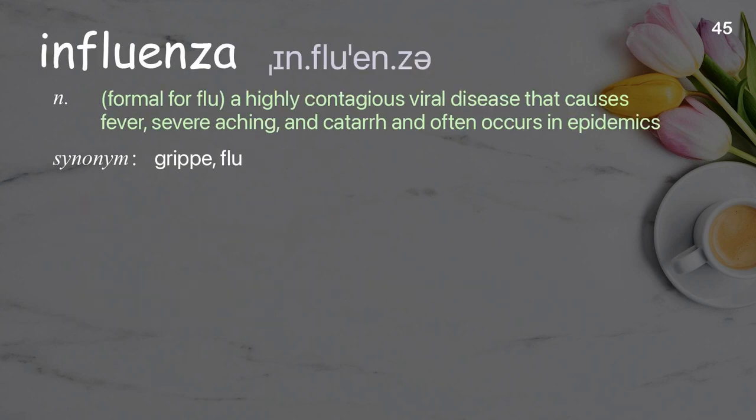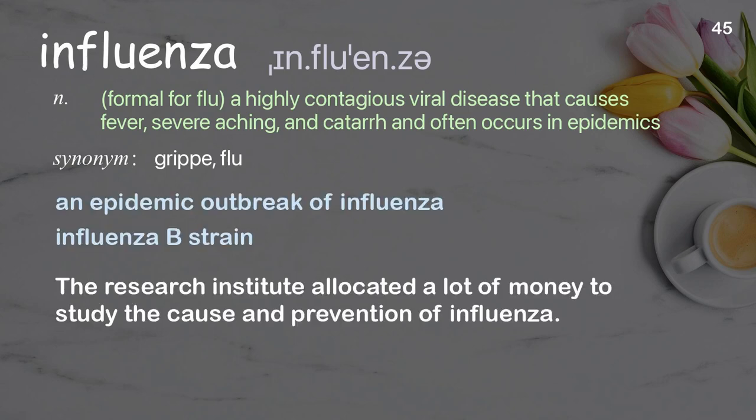Influenza: formal for flu; a highly contagious viral disease that causes fever, severe aching, and catarrh, and often occurs in epidemics. Examples: an epidemic outbreak of influenza, influenza B strain. The research institute allocated a lot of money to study the cause and prevention of influenza.